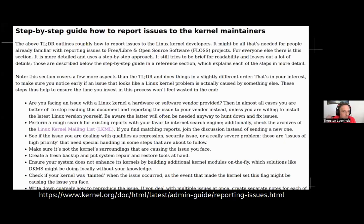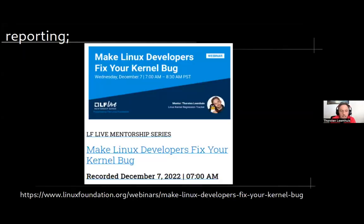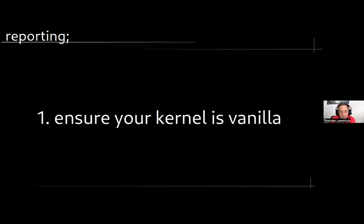The reporting issues document looks long and a bit scary, but there's a step-by-step guide that helps you get through it. You're free to ignore some steps if you think you don't need them, but it's a good idea to at least think about each step, as it helps prevent writing a report that gets ignored. There's also a reference section that explains details if you need them. A dedicated mentorship session about this was held in December, and the video and slides are available.